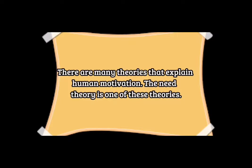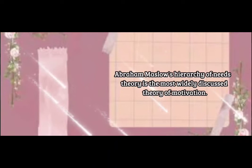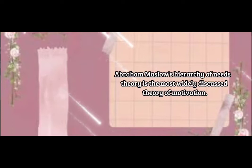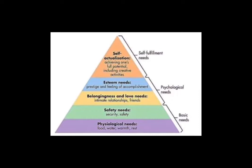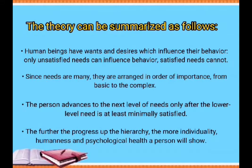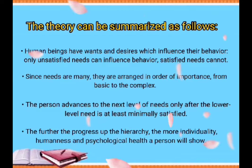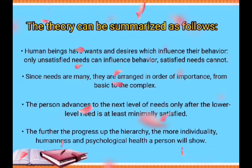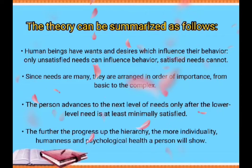Abraham Maslow's hierarchy of needs theory is the most widely discussed theory of motivation, covering self-fulfillment needs, psychological needs, and basic needs. The theory can be summarized as follows: human beings have wants and desires which influence their behavior; only unsatisfied needs can influence behavior — satisfied needs cannot. Since needs are many, they are arranged in order of importance from basic to complex. A person advances to the next level only after the lower level need is at least minimally satisfied. The further the progress up the hierarchy, the more individuality, human needs, and psychological health a person will show.